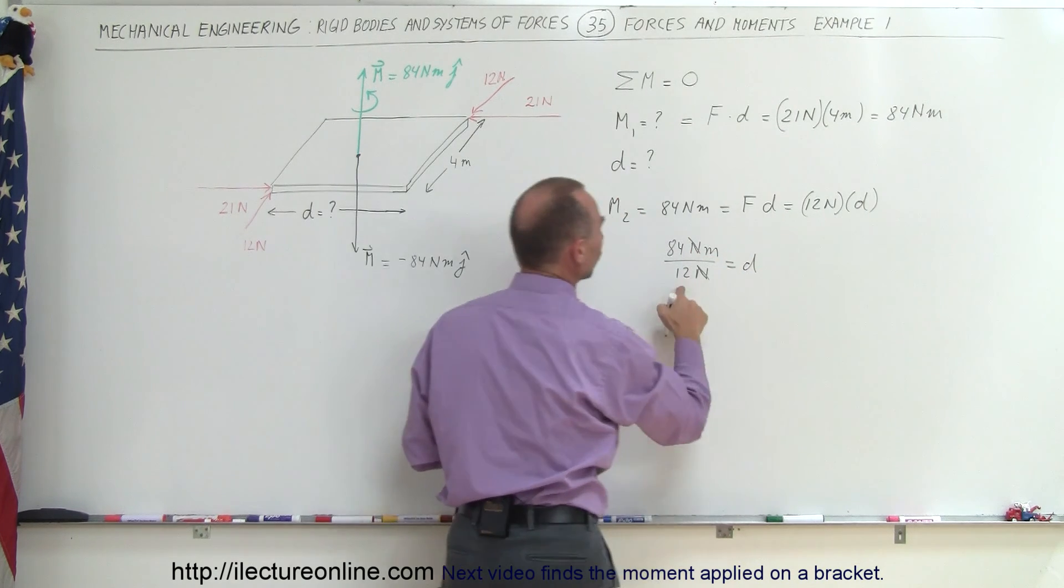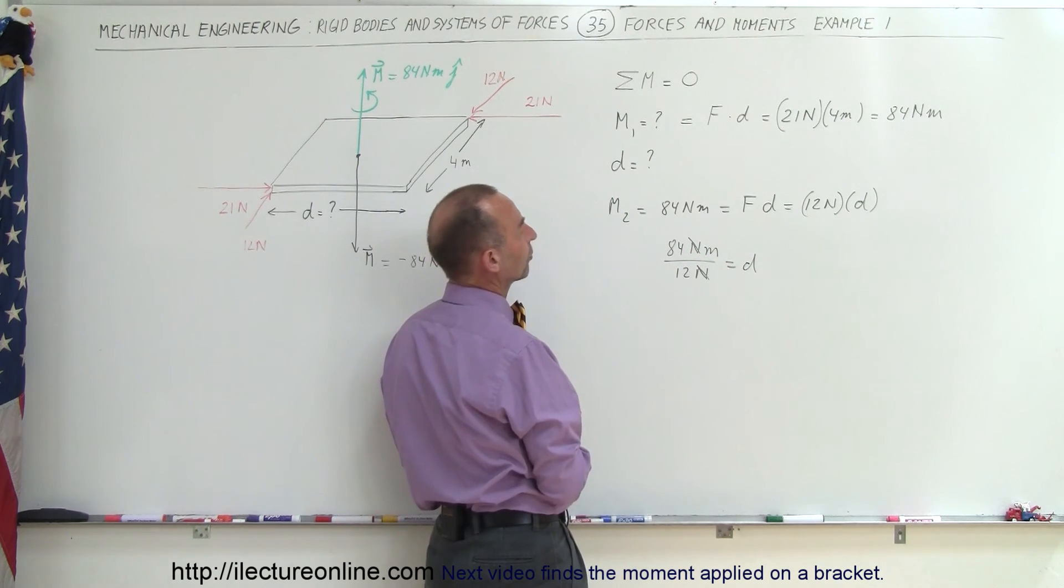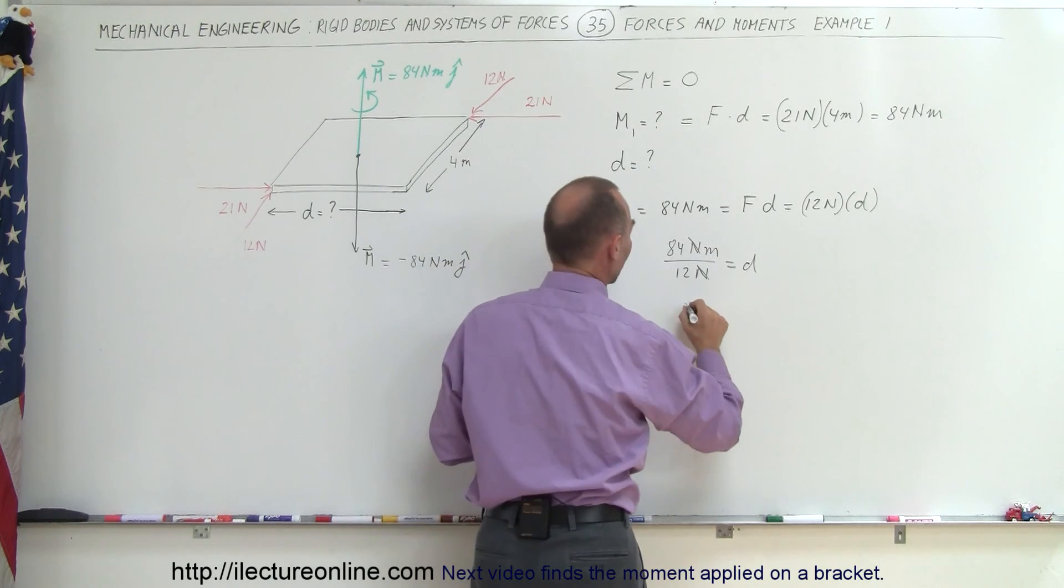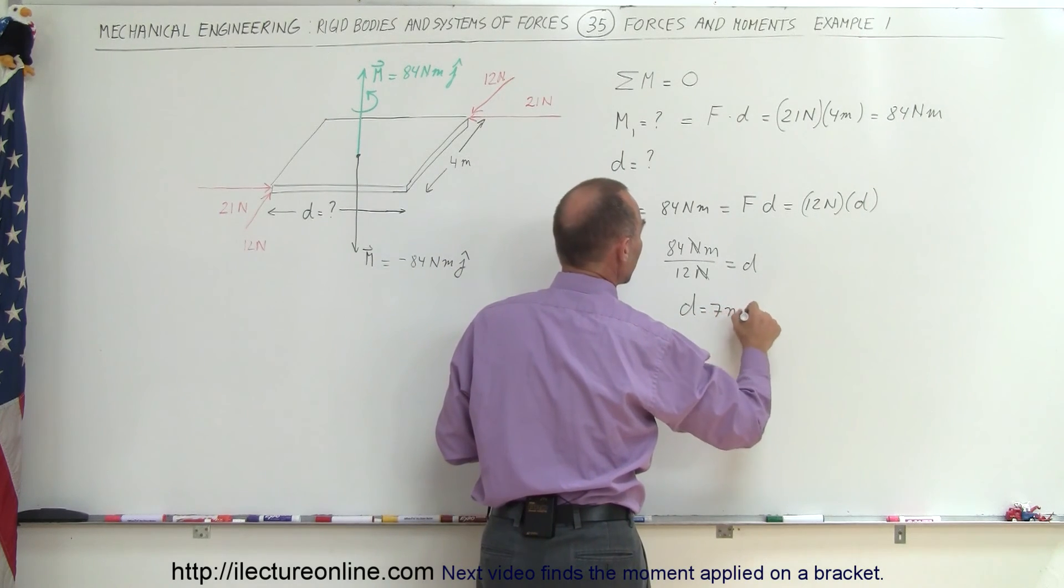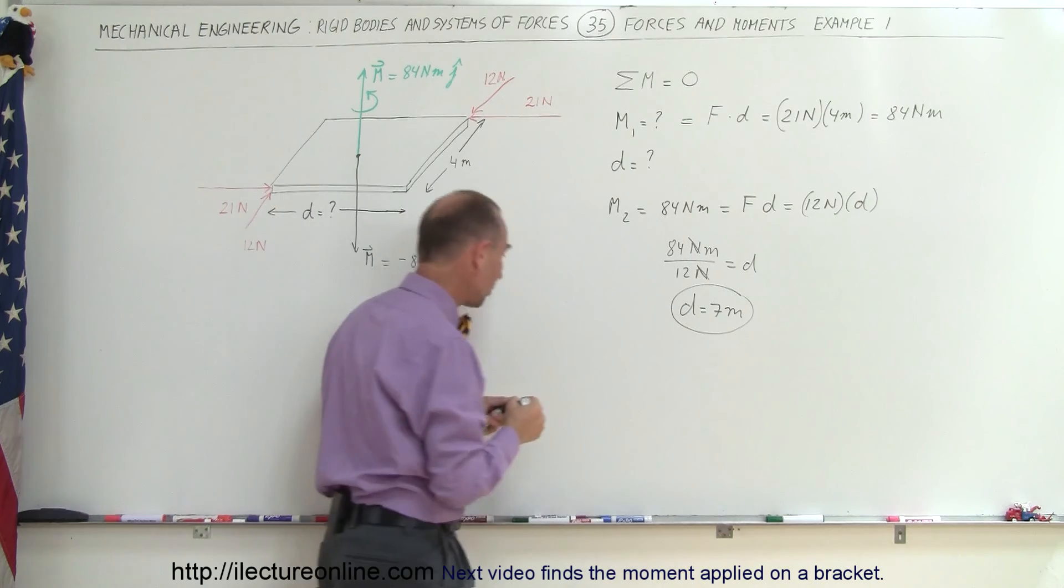Newtons cancels out. 12 goes into 84, looks like 7 times. So d is equal to 7 meters, and that was the second answer we were looking for.